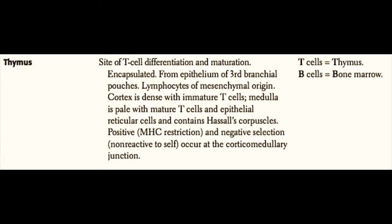Another organ important for immunology is the thymus. This is the site of T cell differentiation and maturation — remember, it is not the site of T cell production. T cells are born and raised in the bone marrow before going to the thymus for education. Like the spleen and lymph nodes, the thymus is encapsulated. Developmentally, it comes from the epithelium of the third branchial pouches, while the lymphocytes are of mesenchymal origin.